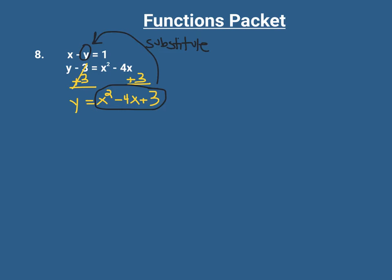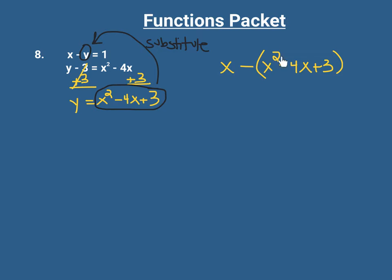For y, into the other equation. So instead of having x minus y equals 1, we'll have x minus this quantity equals 1. In place of y we're going to put x squared minus 4x plus 3. It's really important — since we're subtracting out this y, which is a trinomial — that we put it in parentheses, so we remember to distribute this minus sign to all the terms.